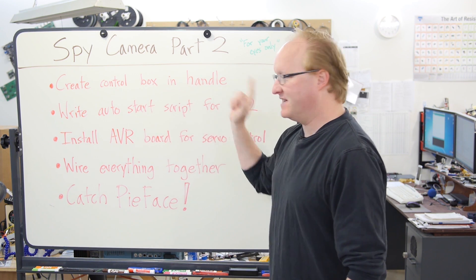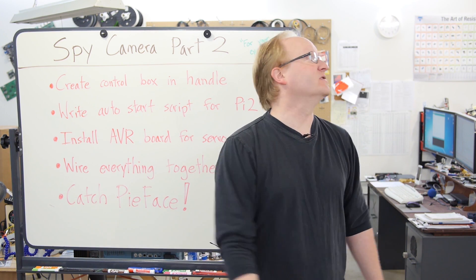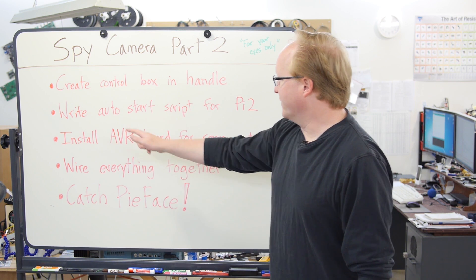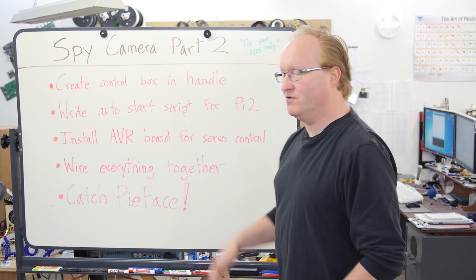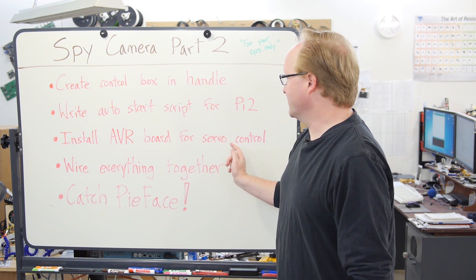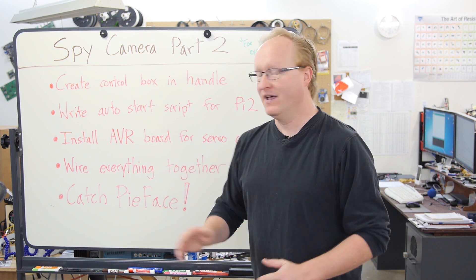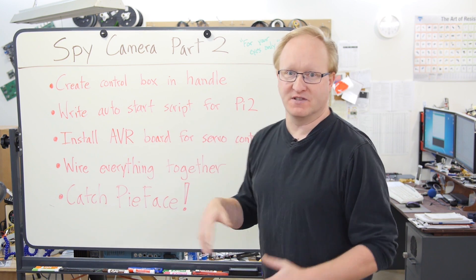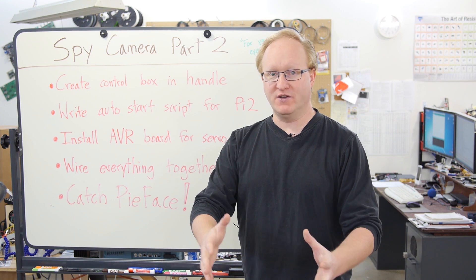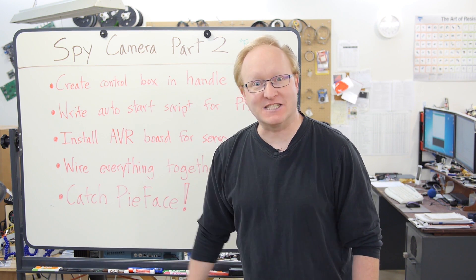We're going to create a control box in the handle so you can covertly zoom in and out and start, stop, record, just with it down by your side. We're going to write an auto start script for the Pi 2 so it'll launch into the video streaming mode. Install an AVR board for servo control. A microcontroller will do a much better job of controlling a servo than the Pi will do since it's busy streaming video.